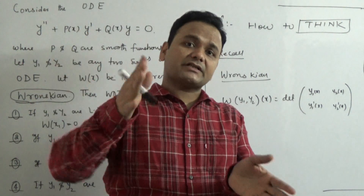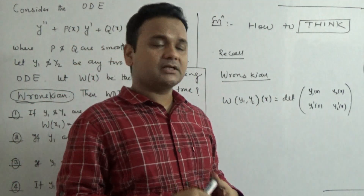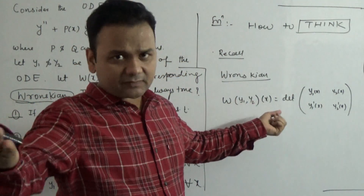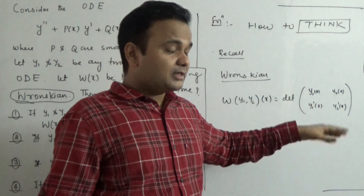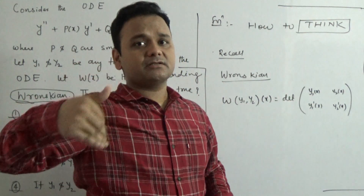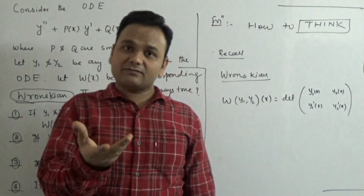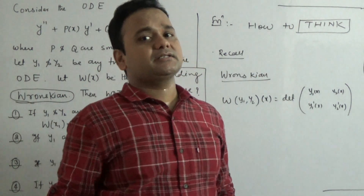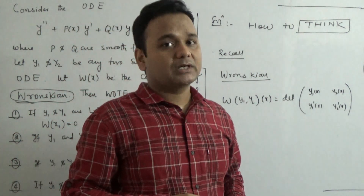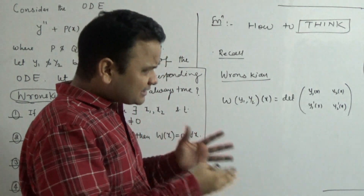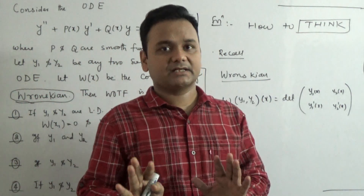If you are looking for the Wronskian of two functions, both functions must be differentiable. If you have three functions, you go to a 3×3 matrix with y1, y2, y3, their first derivatives, and their second derivatives. For the Wronskian of n functions, each function must be differentiable at least n−1 times.